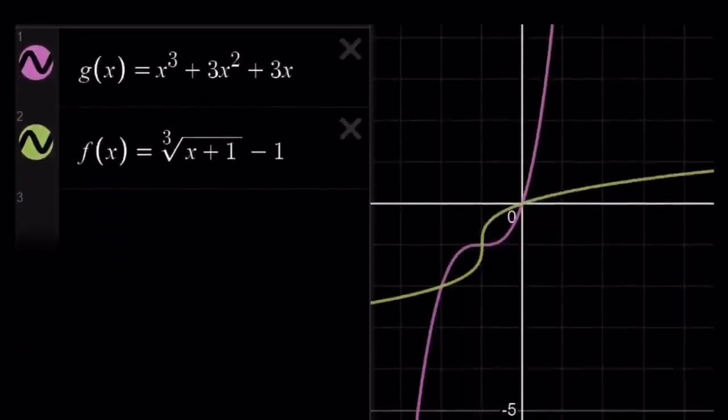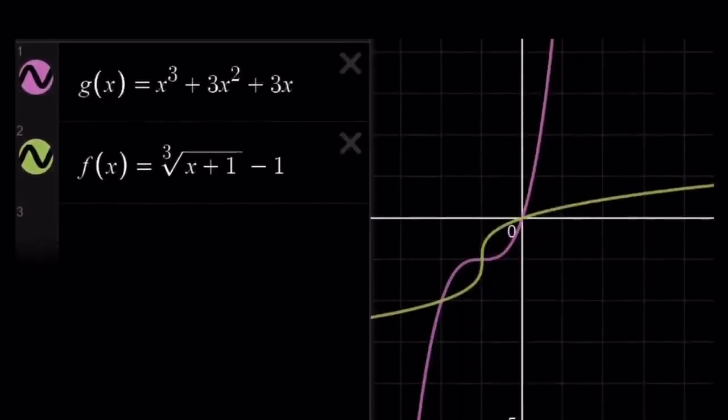In addition I just want to show you a graph of the situation. Then you can be more convinced that these two functions are actually inverses. G of x is the expression that was given inside the parentheses. And f of x is what we found at the end. And notice that if I draw the diagonal y equals x they're going to be symmetrical.